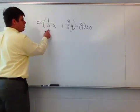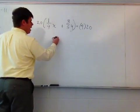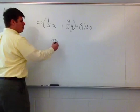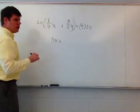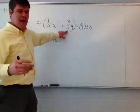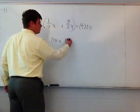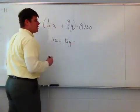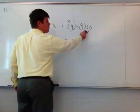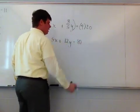So if I'm going to go ahead and do this, 20 times 1/4 is 5x plus 3/5 of 20. Well, 20 divided by 5 is 4. 4 times 3 is 12. So 3/5 of 20 is 12y, and that is equivalent to 4 times 20, which is 80.